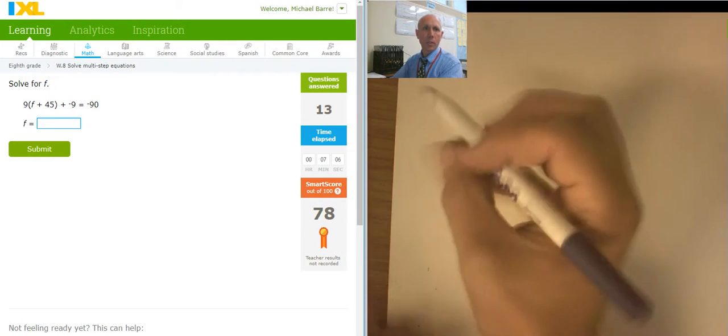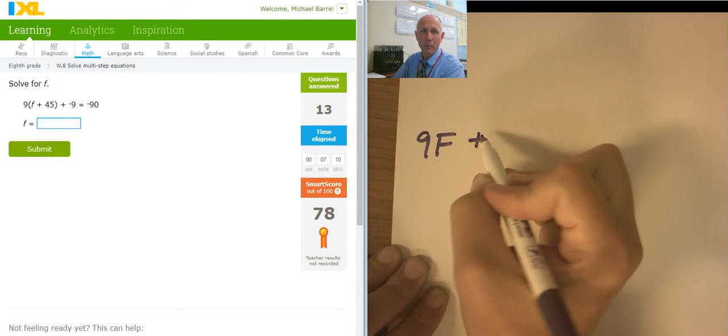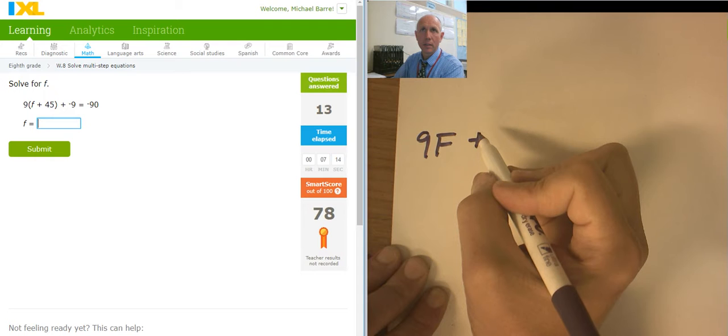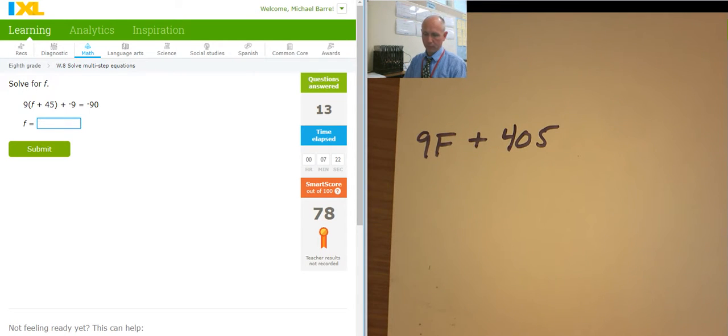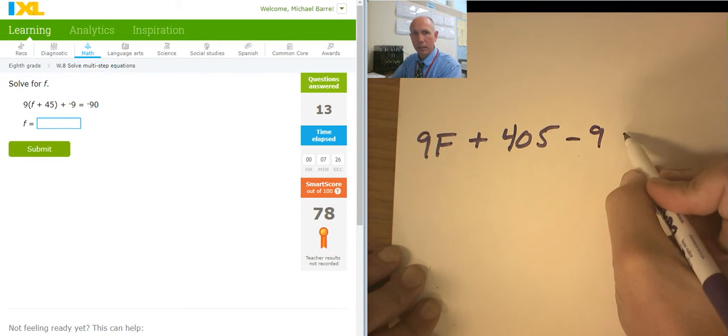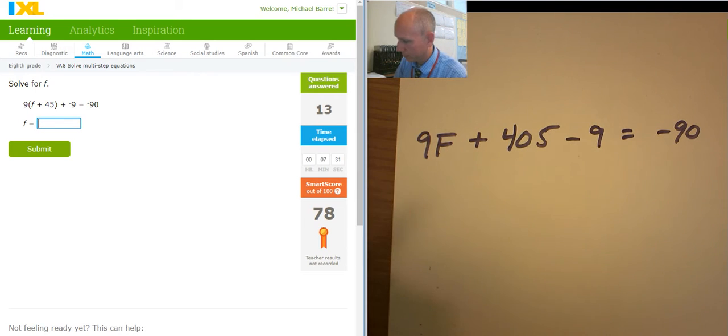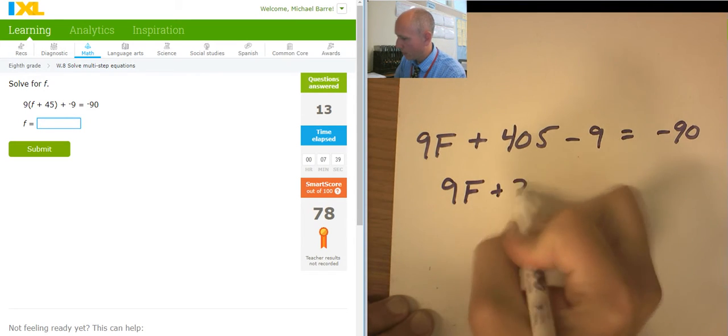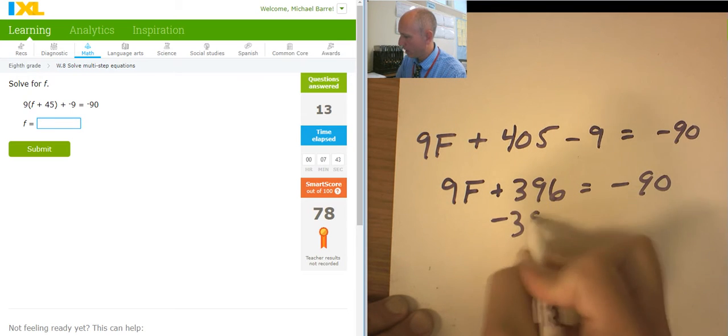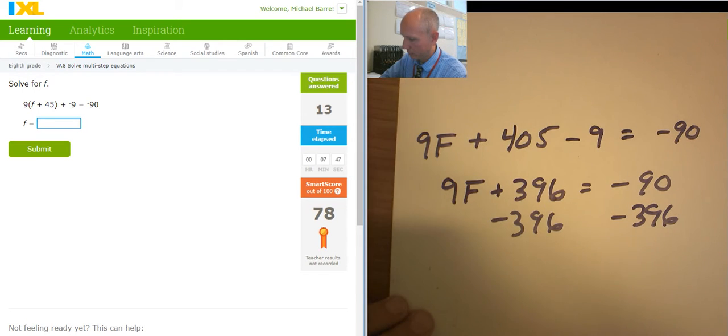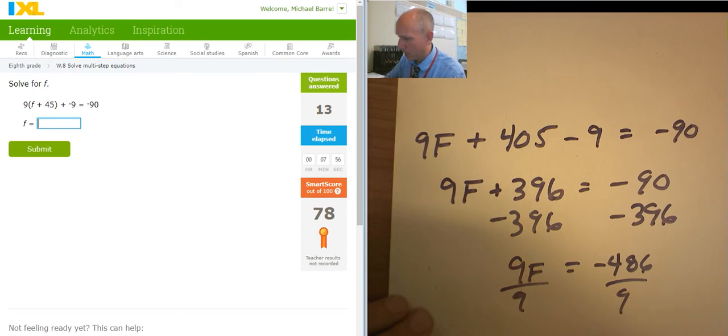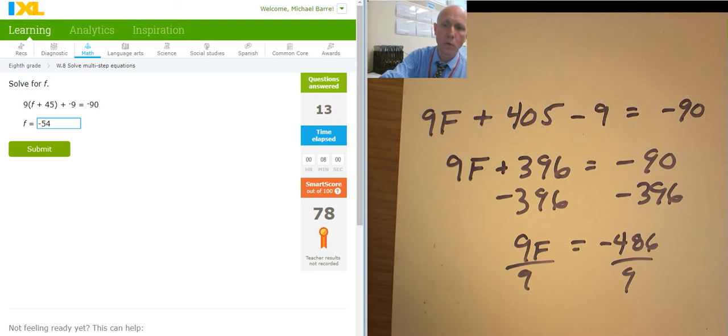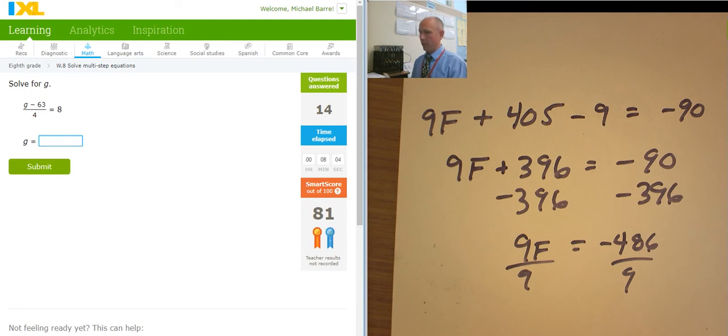Okay, I'm going to do one more. Start with the distribution. That's going to give me 9f plus 9 times 45. 9 times 50 is 450. Is that going to be 405? I'm going to check that with the calculator. 405 minus 9 equals negative 90. So I have 405 minus 9. So I have 9f plus 396 equals negative 90. Subtracting 396 from both sides. I'm at 9f equals negative 486. Dividing both sides by 9. I'm to negative 54. I'm going for it. Go for it, Barr. Great job. Okay. That's it for this one. Thank you for watching. Hopefully it helped.